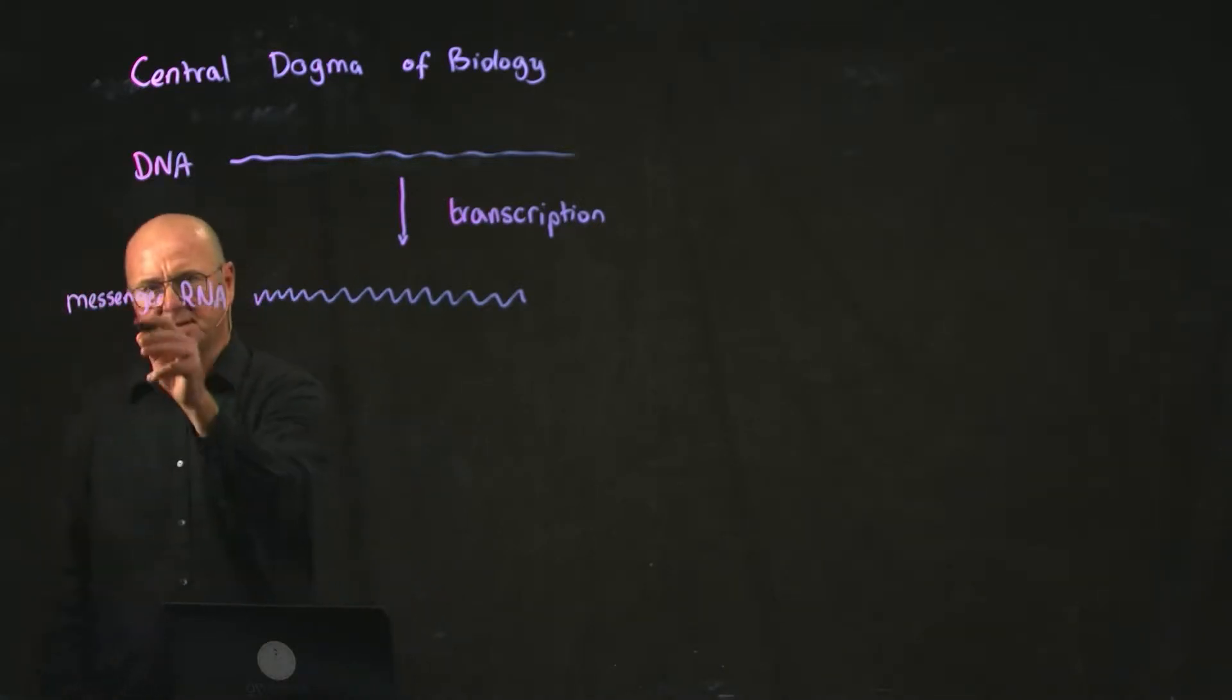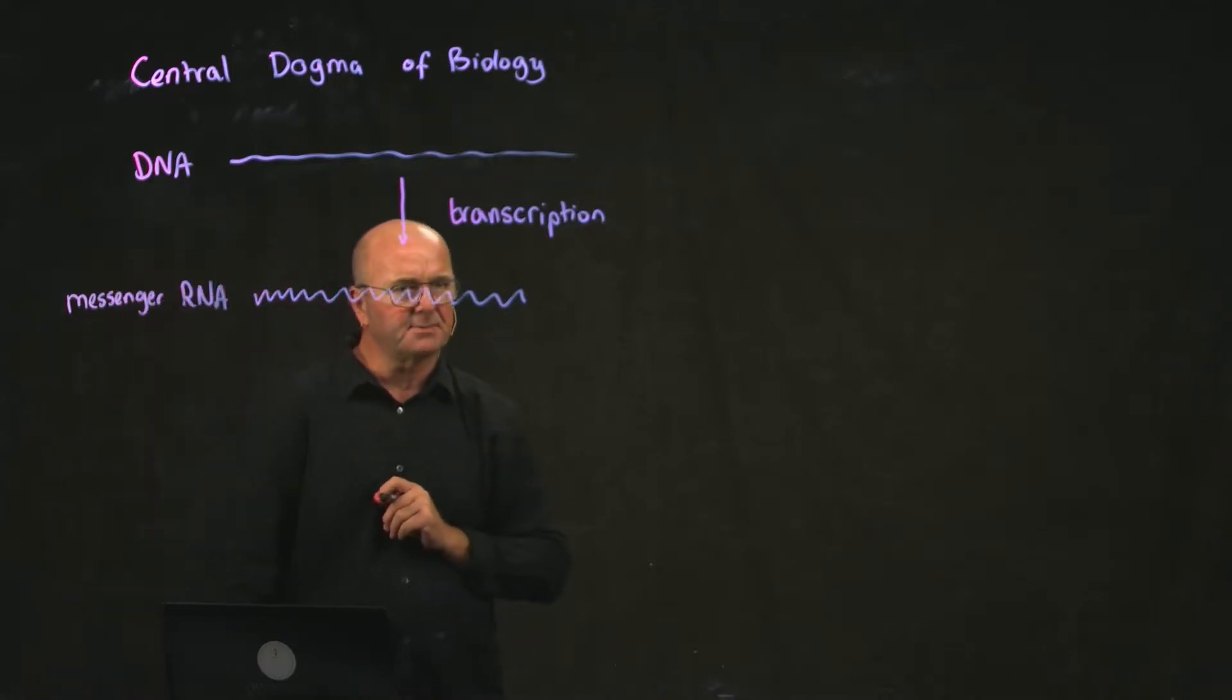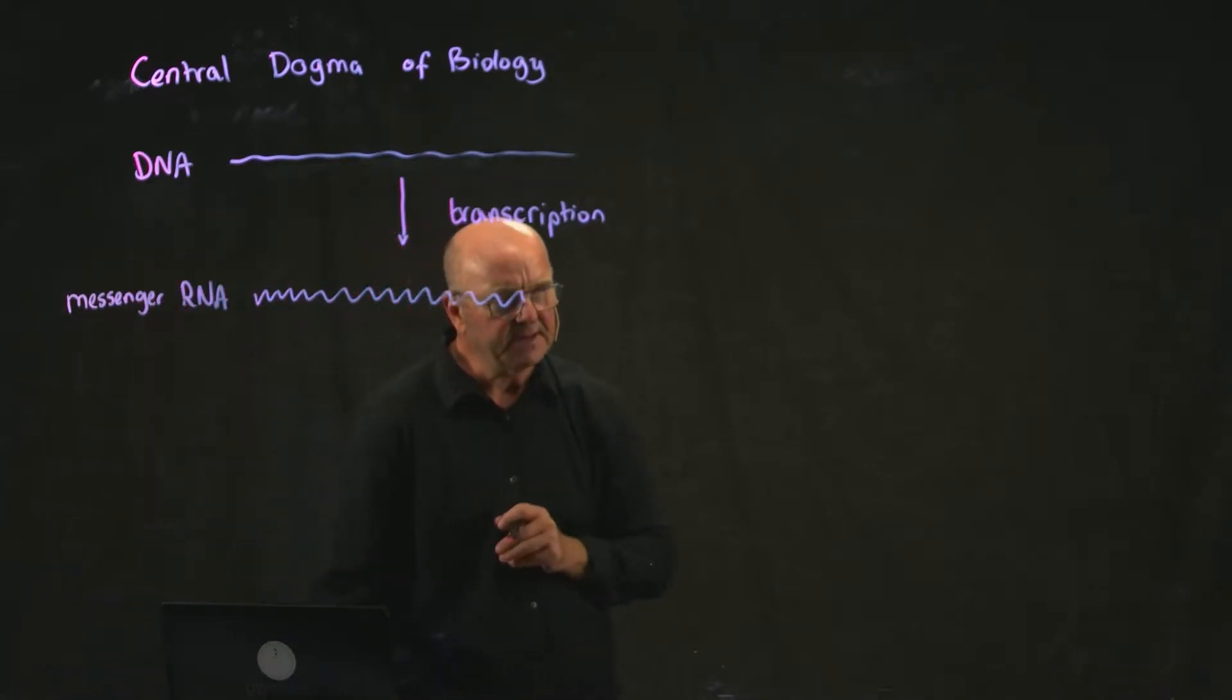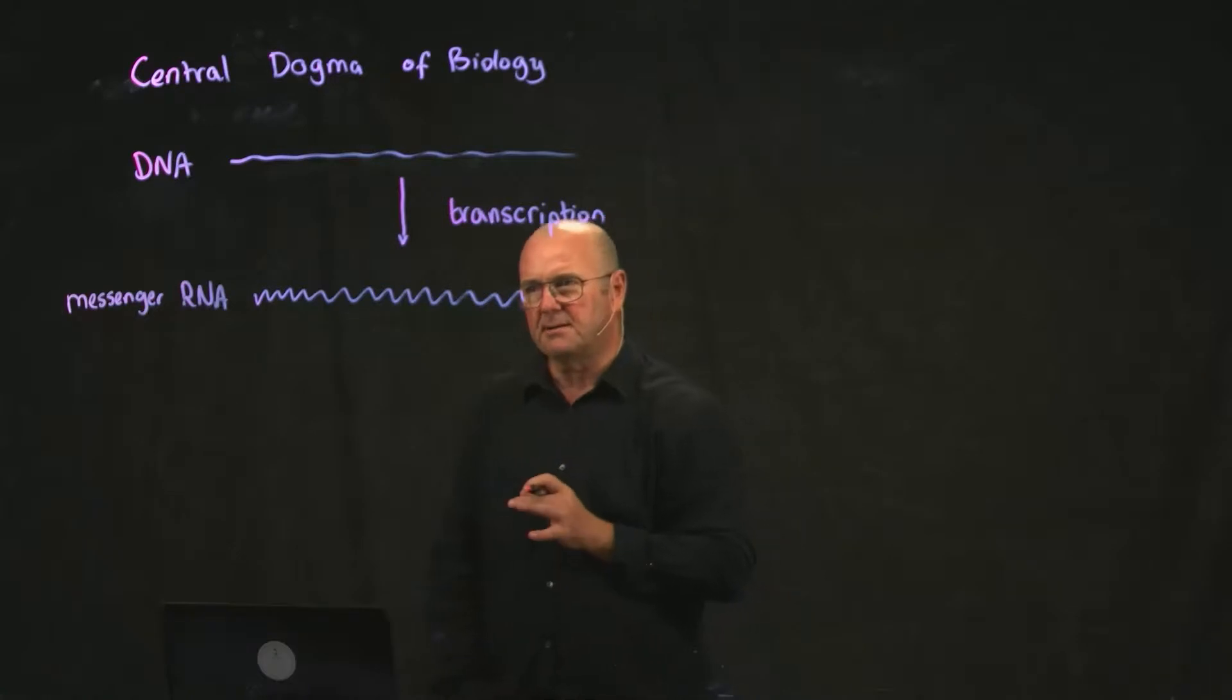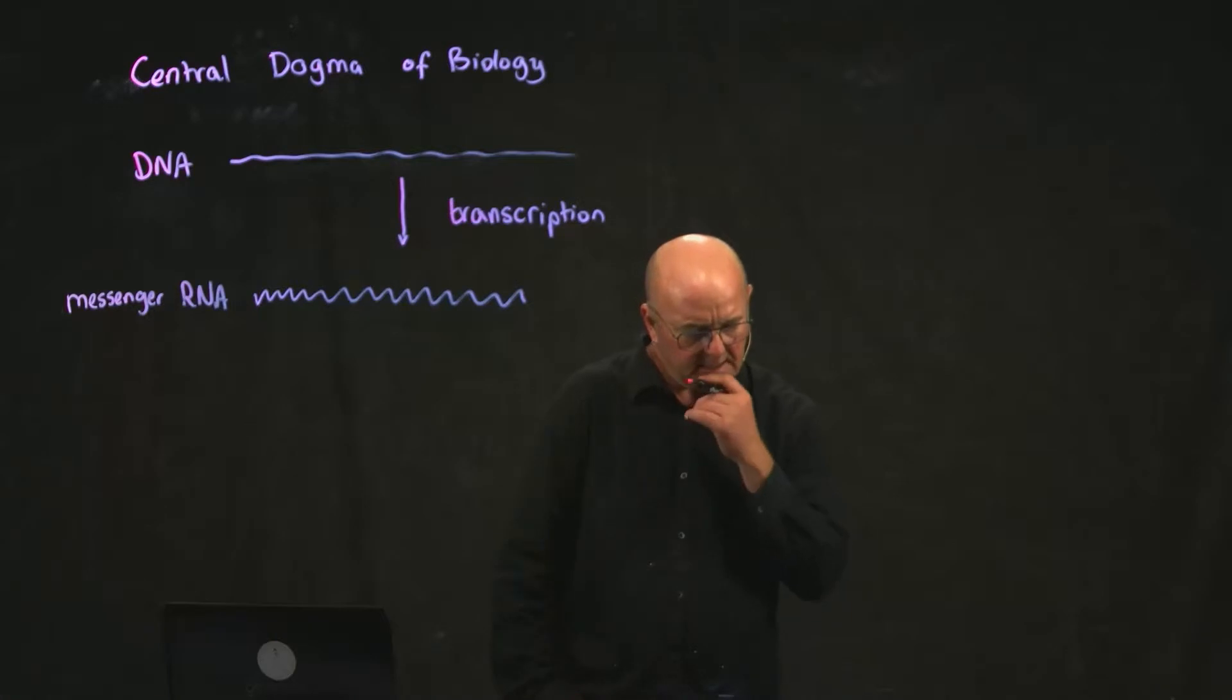In addition to messenger RNA, there's two other types of RNA. There's one called tRNA, transfer RNA, and one called rRNA, ribosomal RNA. And you saw those appear earlier, and we'll talk more about exactly what those are in upcoming classes.